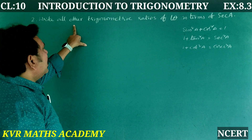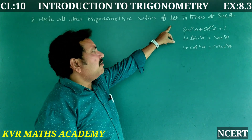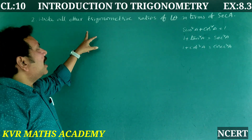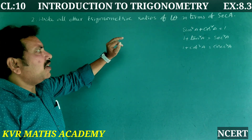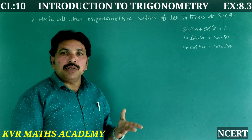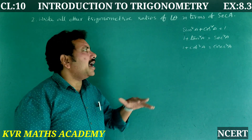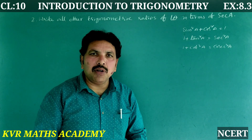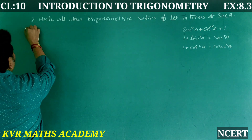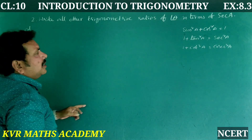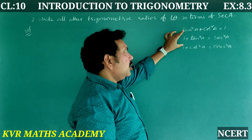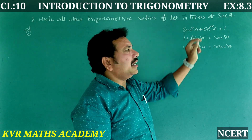Second problem: write all other trigonometric ratios of angle A in terms of secant A. That means we need to express sin A, cos A, tan A, cosec A, and cot A all in terms of secant A. We will again use the three trigonometric identities.